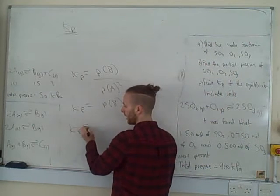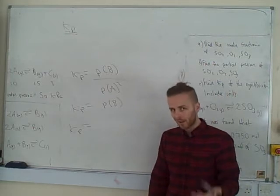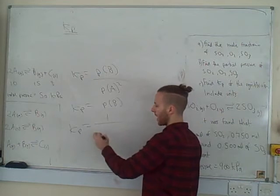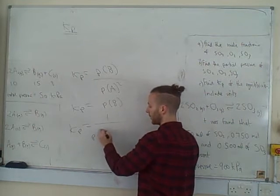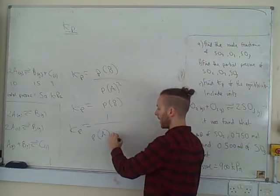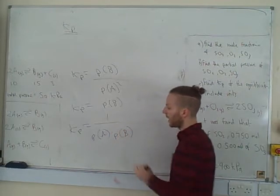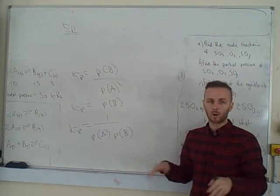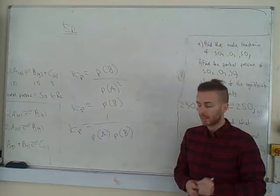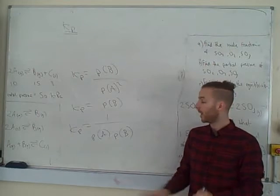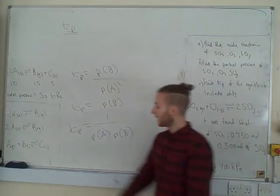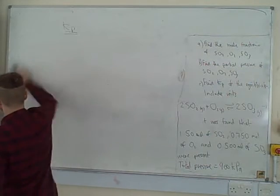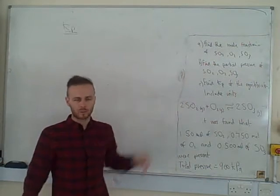For the third one, there are no gaseous products, so we put 1 on the top, over the partial pressure of A multiplied by the partial pressure of B. A really common mistake is trying to add these together — that's not how it works, either with KC or KP. You must multiply them.